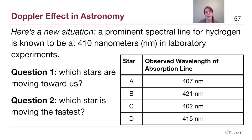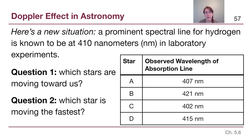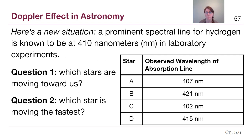Now, instead of looking at a pattern, we are focusing on a single spectral line and looking at the number value — the wavelength of that spectral line. For this particular spectral line, it is supposed to be at 410 nanometers when measured in a lab. When we look at stars A, B, C, and D, we have 407 nanometers, 421 nanometers, 402 nanometers, and 415 nanometers.